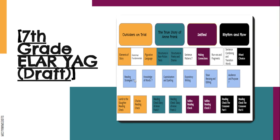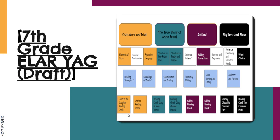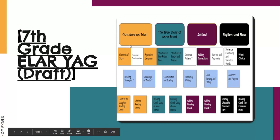Additional focus areas are for students who either need extension because they're done with all their other work, or for students who might need more support in a particular area. Our final row is what we call the challenge area — again, this might be for students who are done with all their other work and need some extension work to do. You also might want to use these reading checks to help support students and make sure that the reading they're doing for the project is supported.